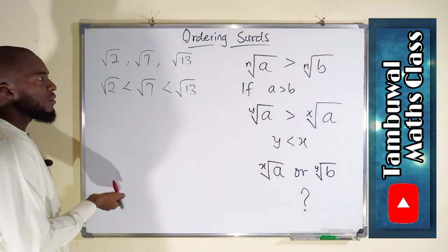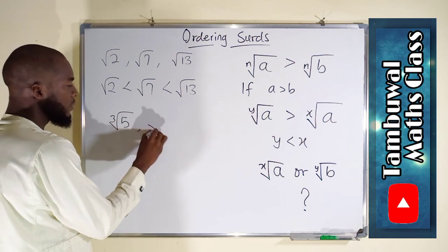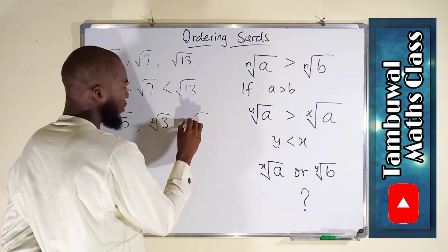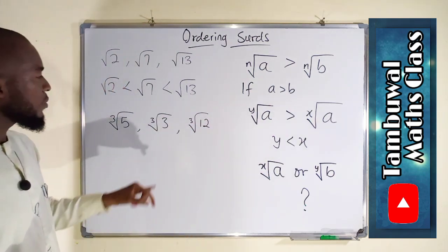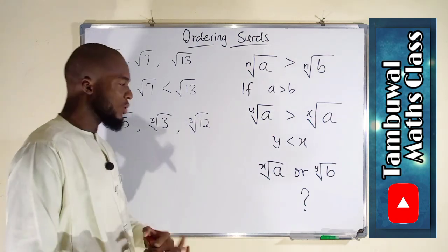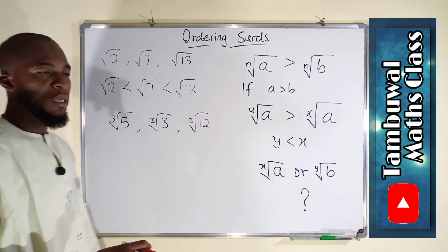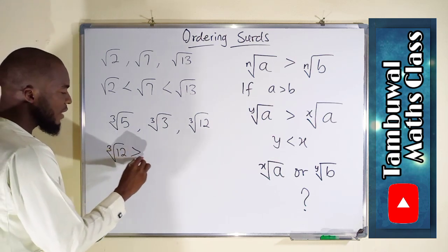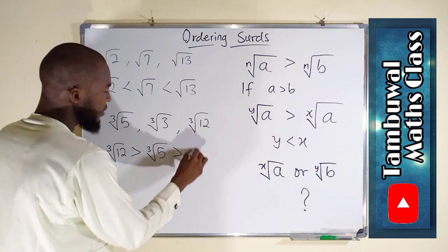You can check it for another degree — say cube root of 5, cube root of 3, and cube root of 12. The degrees are exactly the same, so you consider the radicands. The greatest radicand is the greatest surd. So 12 is the greatest, followed by 5 and 3. In descending order: cube root of 12 is greater than cube root of 5, greater than cube root of 3.